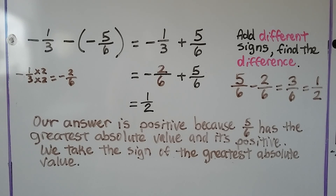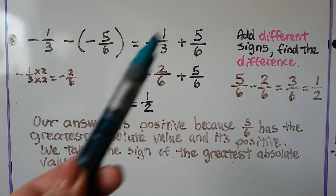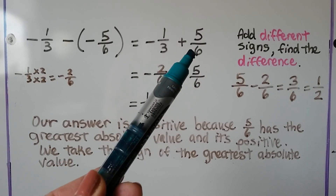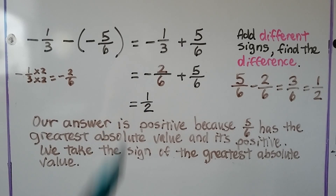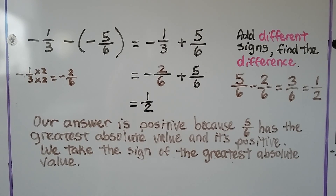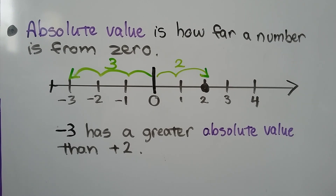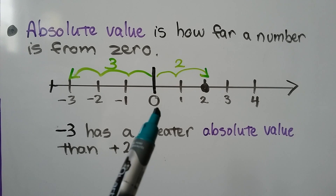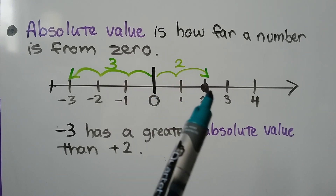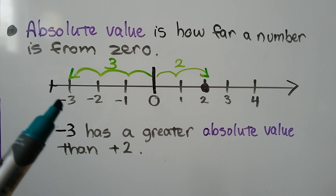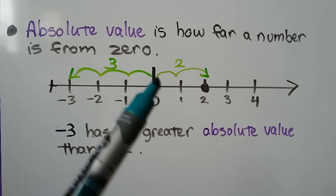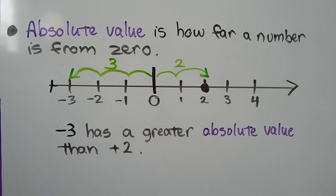It's positive because 5/6 has the greatest absolute value and it's positive — we take the sign of the greatest absolute value. Because this is now a positive and it's farther away from 0, our answer is going to be positive. Remember, absolute value is how far a number is from 0. For example, negative 3 has a greater absolute value than positive 2 because it's farther from 0.